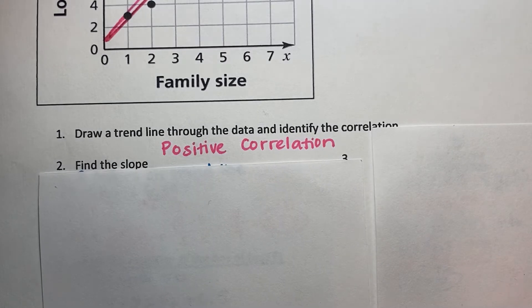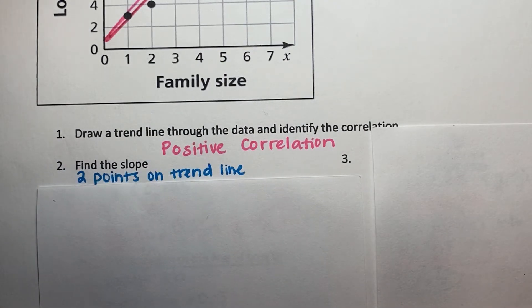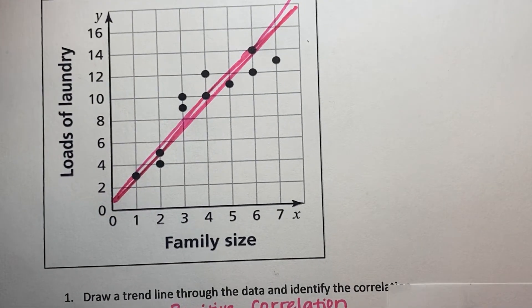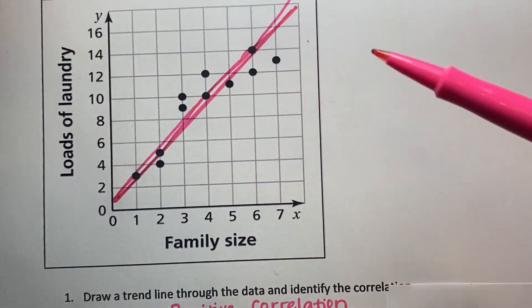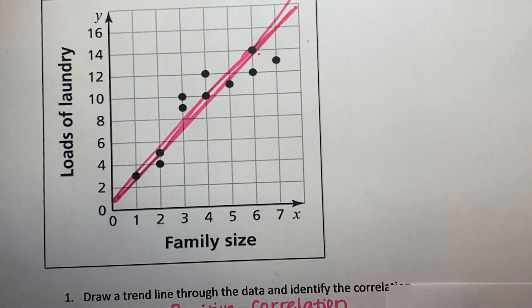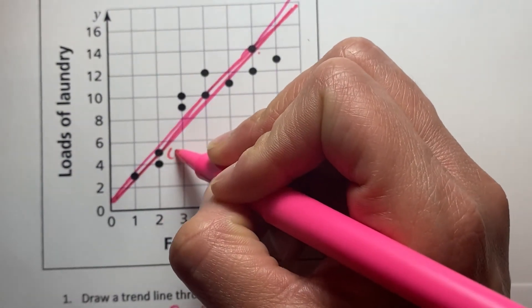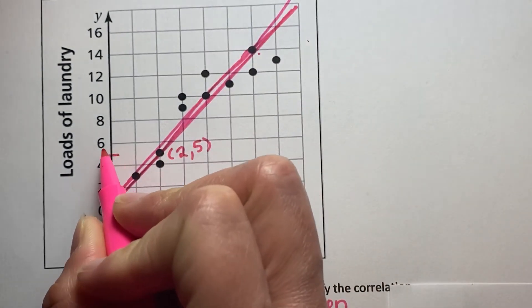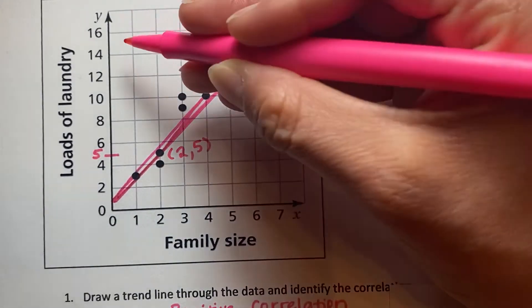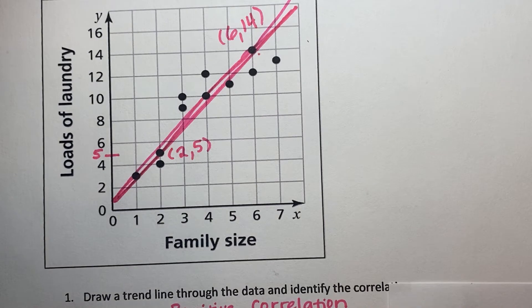The next thing we're going to do is find the slope. So when you find the slope using your trend line, we're going to take two points that fall on our trend line. So I know my trend line was not perfect, but when I look at this data, I can see a few points that do fall on this trend line. I'm going to use two points that are further away from each other so that it gives me a more accurate slope. So here at this point, it would be at 2 comma 5. When I come over here, this is 5. And then if I use a point further away, I'm going to go ahead and identify this point as 6 comma 14.